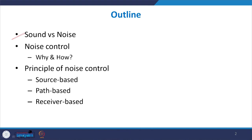Here is the outline for the lecture. First, we will see why we do noise control, what is the difference between noise and sound, and then we will study the basic principles of noise control: source-based, path-based, and receiver-based. We will go through these briefly, because we need to understand the purpose of acoustic materials and how they achieve different types of noise control.